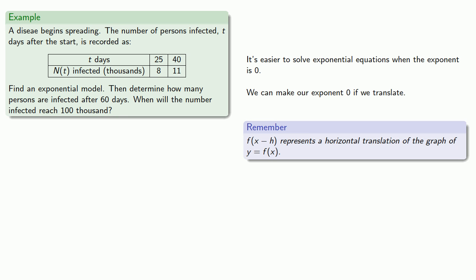Remember, f(x minus h) represents a horizontal translation of the graph of y equals f(x). And so we'll let our function be N(t) equals ae to the power k(t minus 25), where we use t minus 25 because we start at t equal to 25.